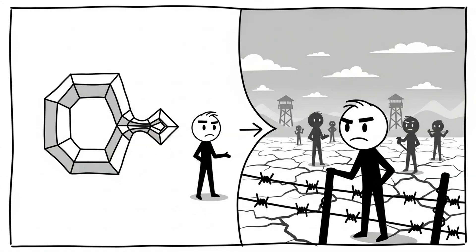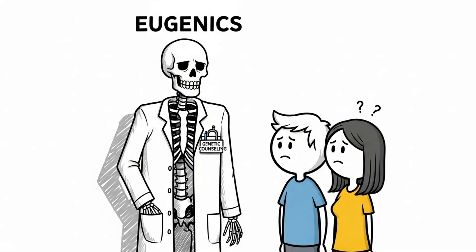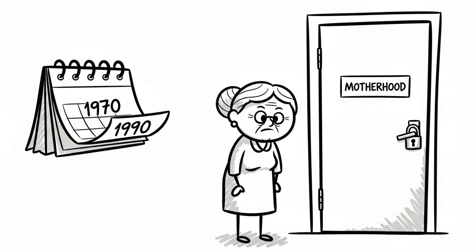In Europe, eugenics took darker turns. In Nazi Germany, it became state doctrine and a blueprint for genocide. But even after World War II, eugenics didn't die. It changed names. It put on new clothes. In Sweden, forced sterilizations continued into the 1970s. In Canada, into the 90s. Some victims are still alive today.